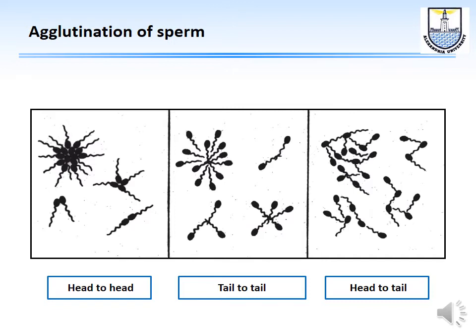Agglutination is another item to assess during semen analysis. It can be head-to-head, tail-to-tail, or head-to-tail. The presence of agglutination indicates either sperm antibodies or some form of infection.